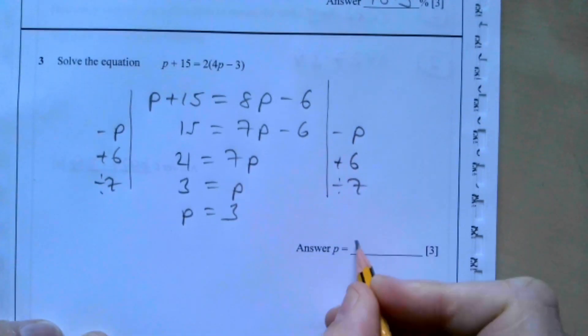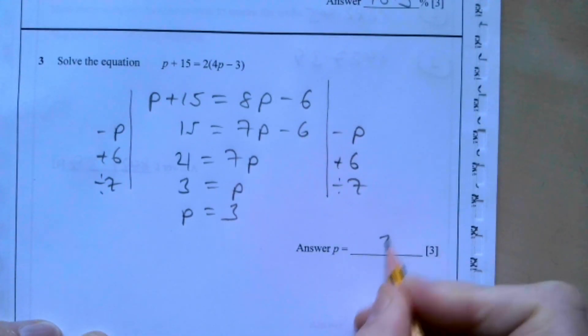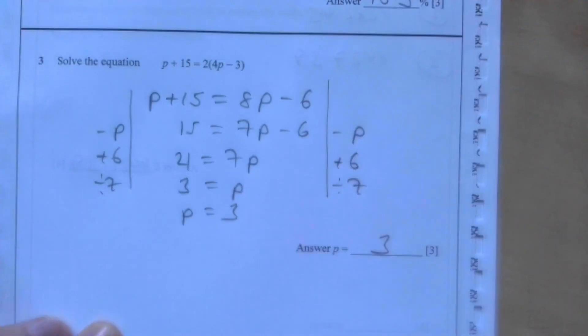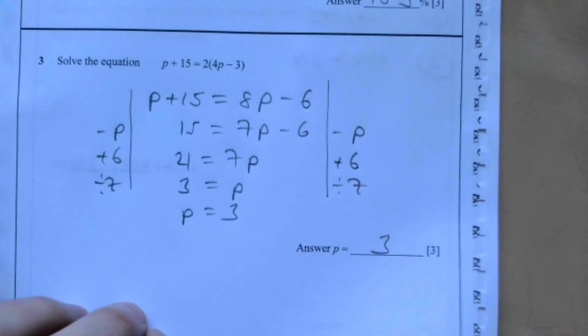That gives us 21 equals 7p, and dividing by 7 gives p equals 3.